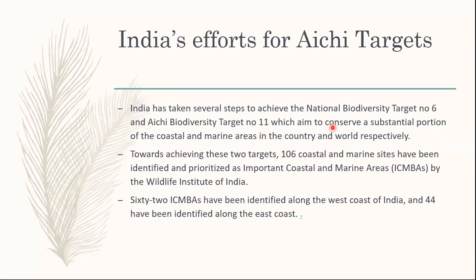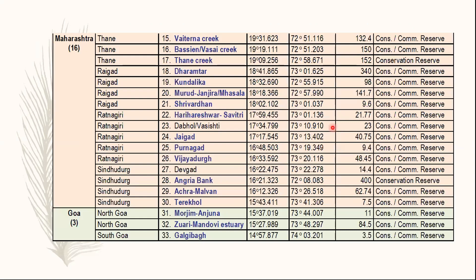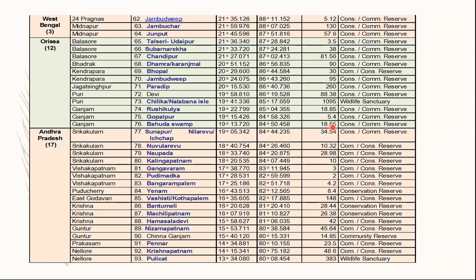India has taken several active steps to achieve Target 6 and Target 11, which aim to conserve substantial parts of coastal and marine areas. Towards achieving these targets, 106 coastal marine sites have been identified and prioritized as important coastal and marine areas for the wildlife authority — 62 along the West Coast and 45 along the East Coast. Gujarat has 14 such sites, Maharashtra has 16, Goa has 3, Karnataka has 10, Kerala has 18, West Bengal has 3, Odisha has 12, Andhra Pradesh has 17, and Tamil Nadu has 14 such sites.